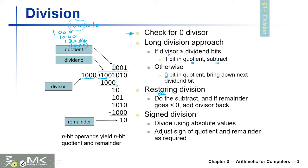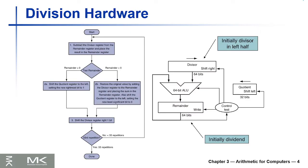Here is basically the circuit. It is very similar to the multiplier circuit. In MIPS we have 32-bit registers, so we are going to make the divisor 64 bits, the remainder 64 bits, and the quotient will be just 32 bits. The reason for 64 bits for the remainder and divisor is the shifting operation. Since both are 64-bit, we need the ALU to also be 64-bit.